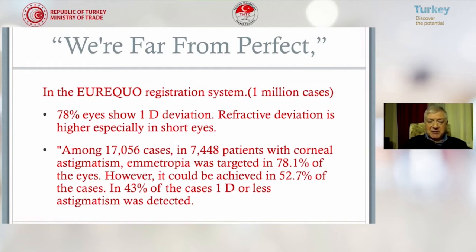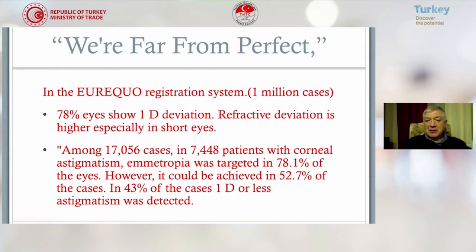In the EUROCO registration system, which gives us data on 1 million cases operated by European surgeons, 70% of eyes showed one diopter deviation. Refractive deviation is higher especially in short eyes. Among 17% of cases — almost 7,500 patients with corneal astigmatism — emmetropia was targeted in 78% of eyes, however it could not be achieved in 52% of cases. In 43% of cases, one diopter or less astigmatism was detected. In summary, we are really very far from perfect.